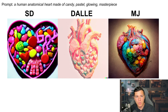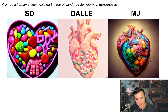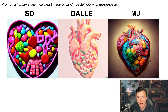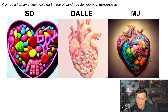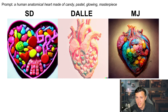The prompt here is 'a human anatomical heart made of candy, pastel, glowing masterpiece.' Stable Diffusion just does a heart with candy in it, which is not what was wanted. DALL-E and Midjourney both capture the semantics. DALL-E captures the concept but it doesn't look that good — it's not glowing by any means, it's not a masterpiece — but it does follow the prompt. Midjourney follows the prompt and adds an artistic, glowing quality which does a lot. Midjourney is the clear winner, followed by DALL-E, then Stable Diffusion.